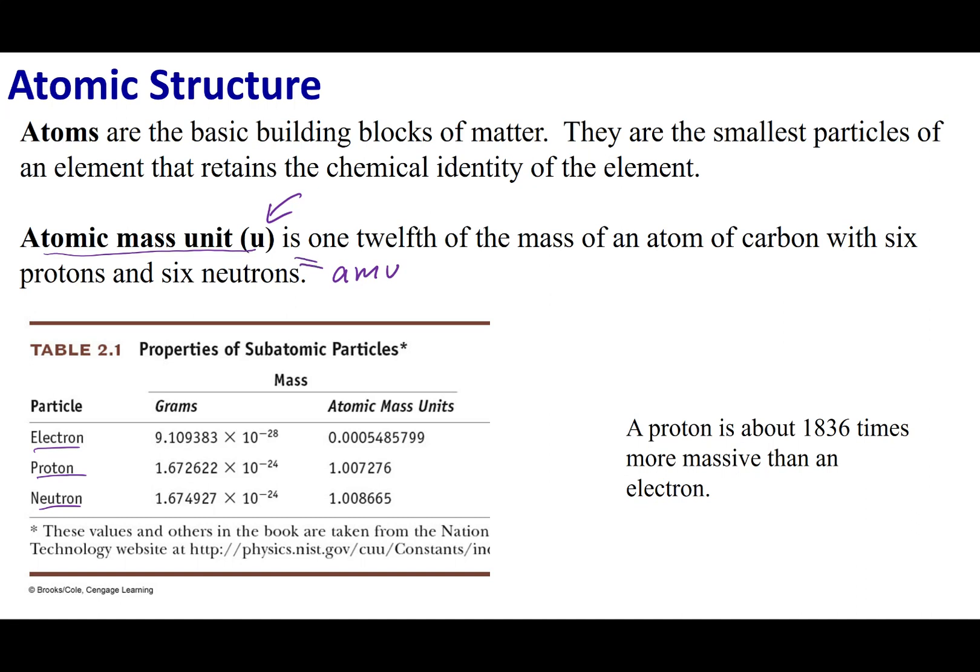An atomic mass unit is if we take carbon, a particular version of carbon with six protons and six neutrons, and if I were to weigh that carbon and divide it by 12, that is how the atomic mass unit is described. If I look at the mass of my subatomic particles, a proton weighs about an atomic mass unit. The neutron is slightly heavier, just really slightly, but basically the same.